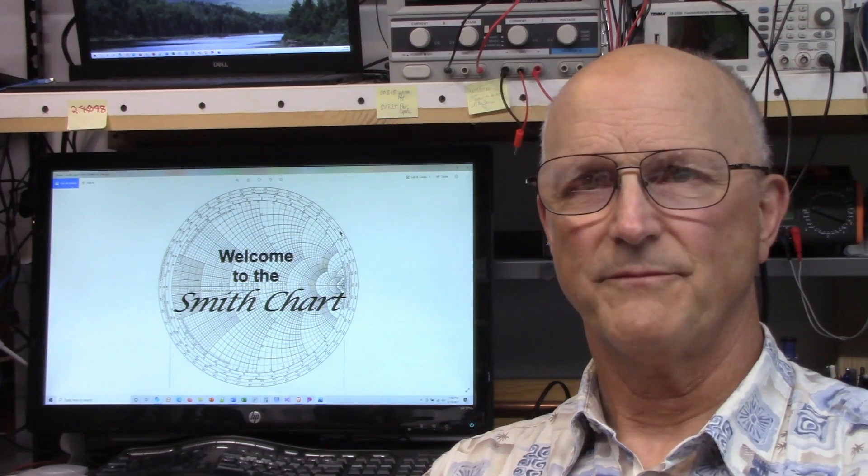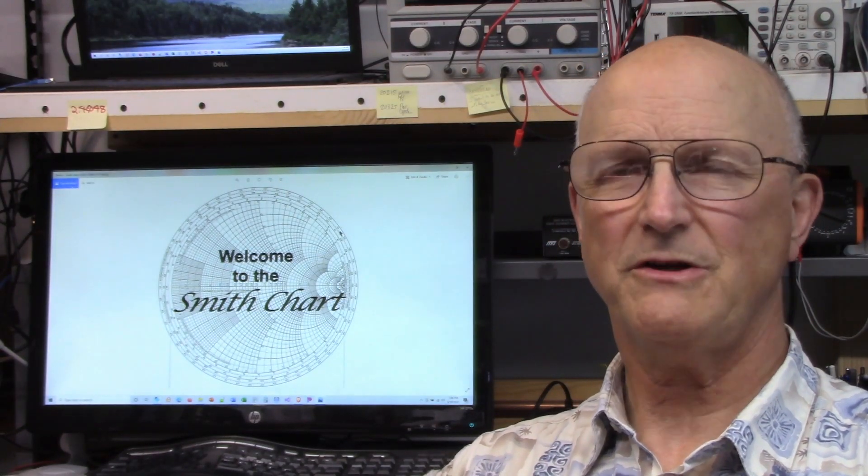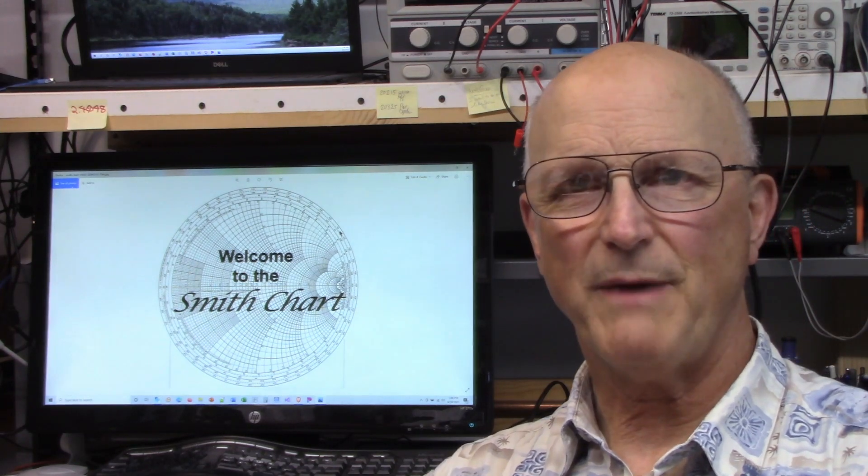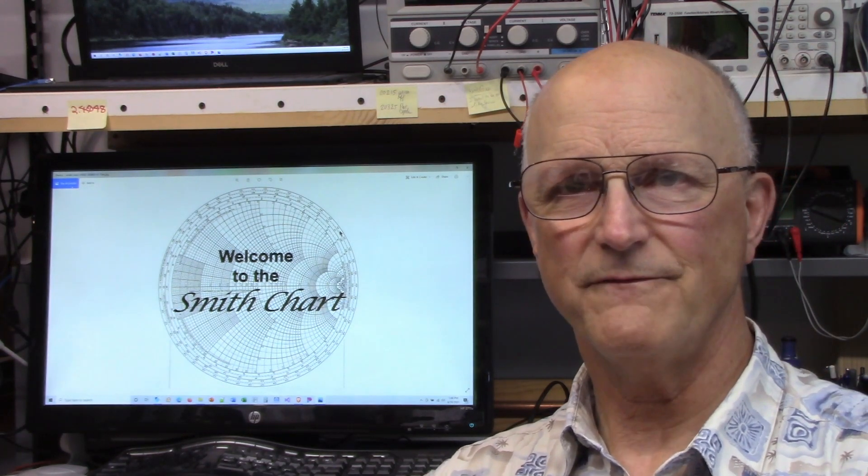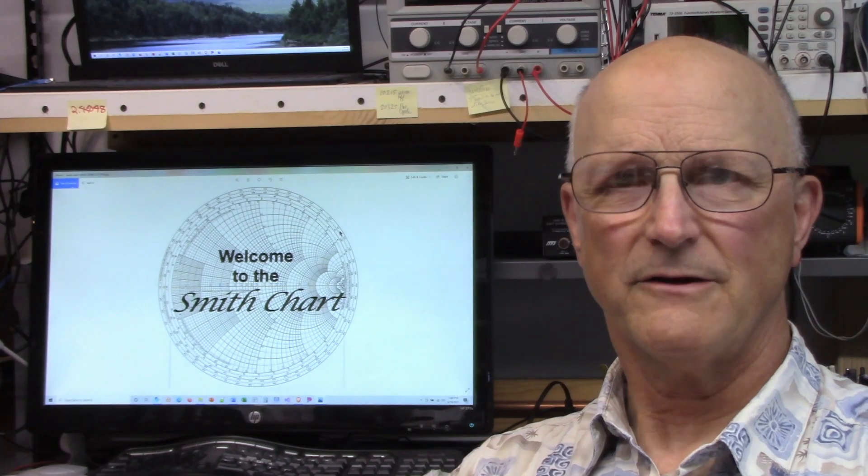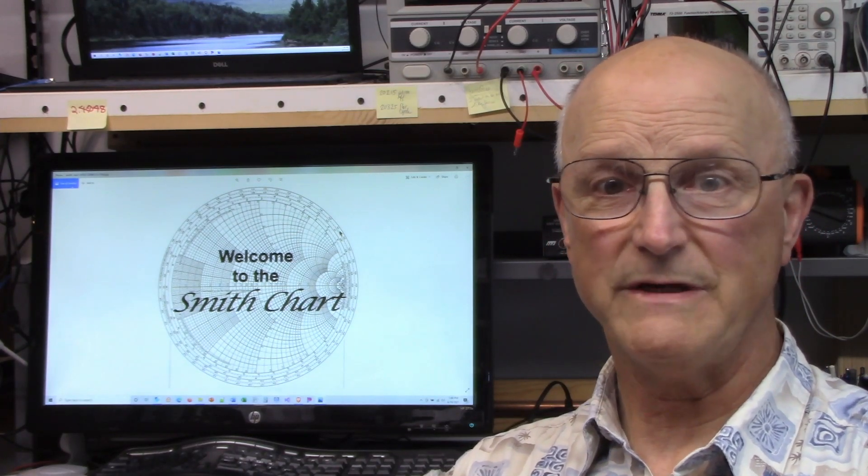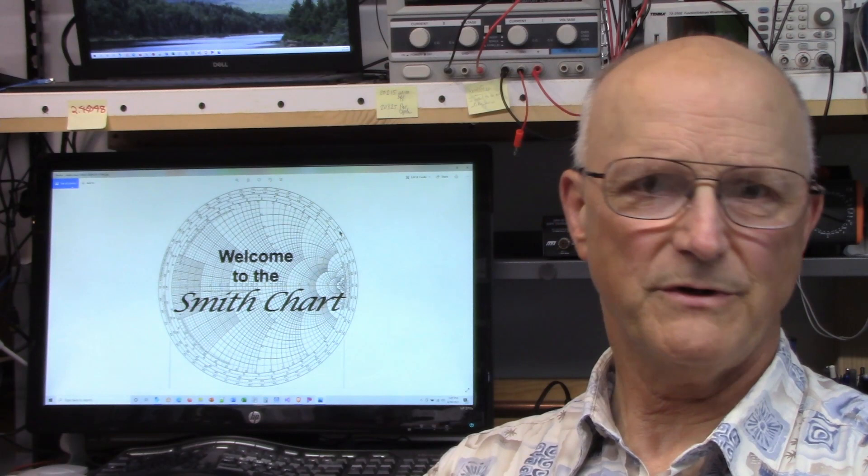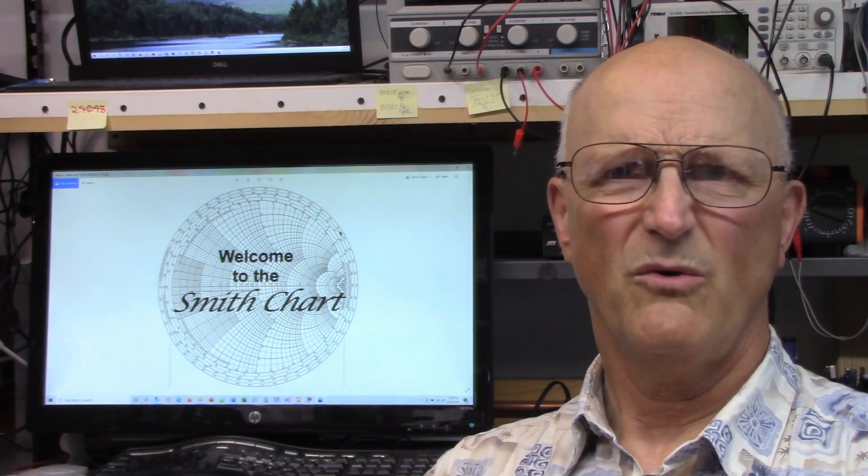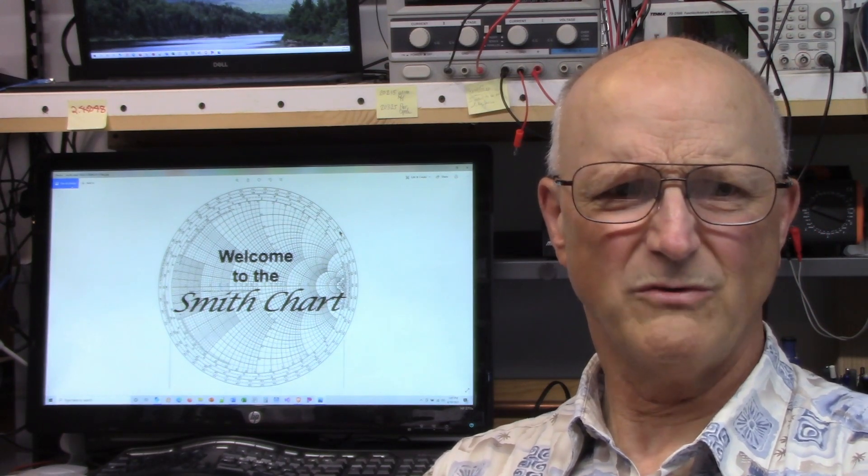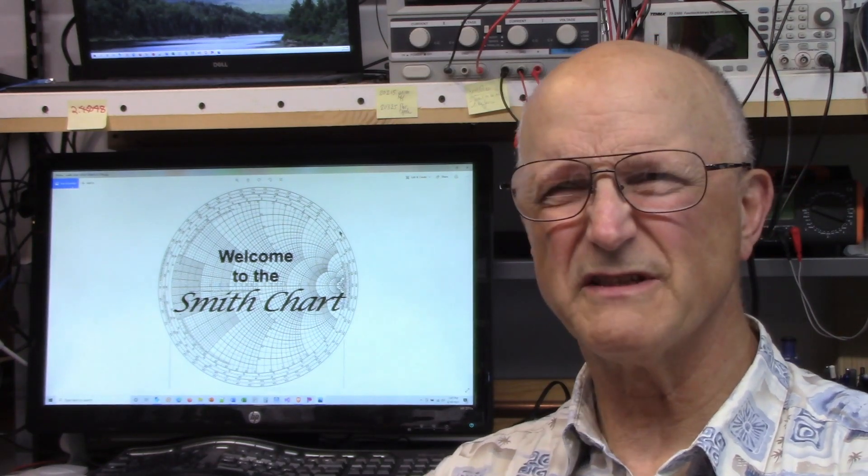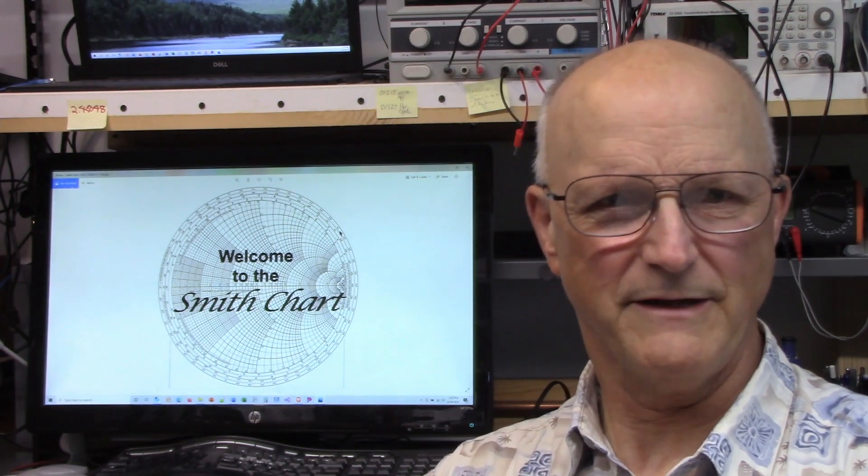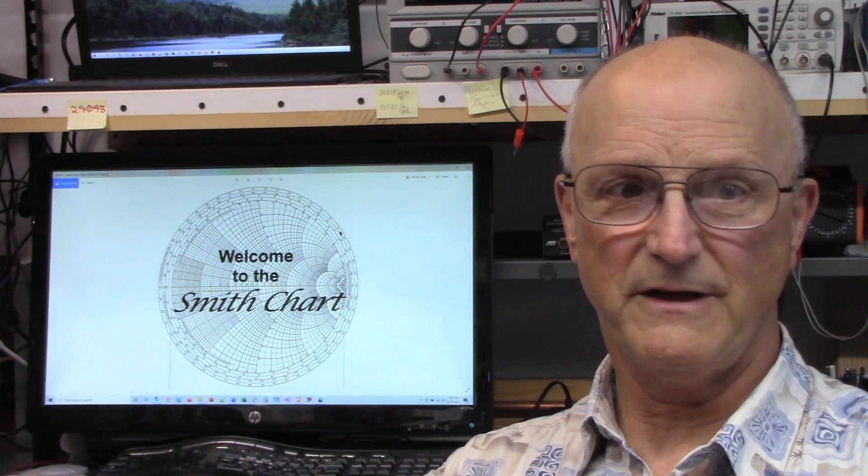So, there you have it. The quick introduction to the reflection coefficient and its mathematically related cousins return loss and VSWR. Now, don't forget, there is a link to a document with all these equations and more in the description of this video. Now, we're ready to dive into a tour of the Smith chart to answer the question, what on earth are all of those lines and circles and curves and stuff and things anyway?